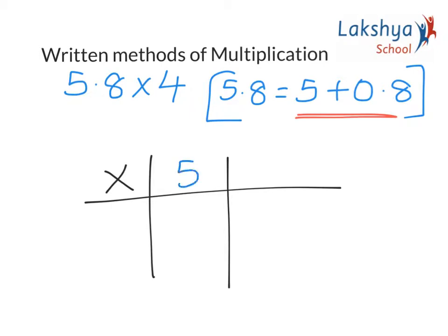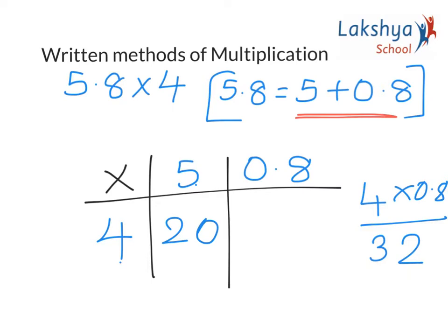So this is 5 and 0.8 multiplied by 4. 4 × 5 gives me 20. 4 multiplied by 0.8 is 4 × 8 is 32. And we need to add a point after a digit over here, so it becomes 3.2. Now we need to add up these numbers.